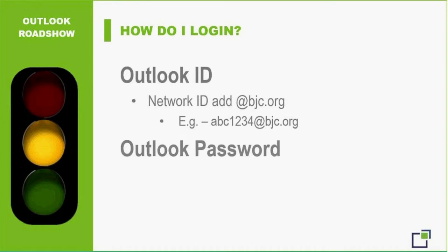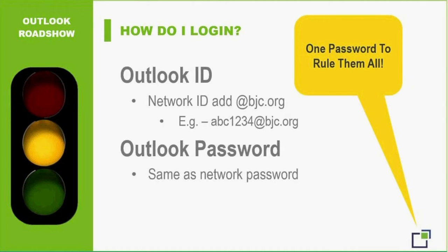Logging in is going to be slightly different than what you're used to with GroupWise. Your ID to log in will now be your network ID - your three letters, your four numbers, followed by @BJC.org. So for me that's nrc0519@BJC.org. Since I've gone through the transition, I've found I haven't had to type that in every single time. Your password will now be the same as your network password - whatever you use to log into your devices. Eventually we'll have one password to rule them all.